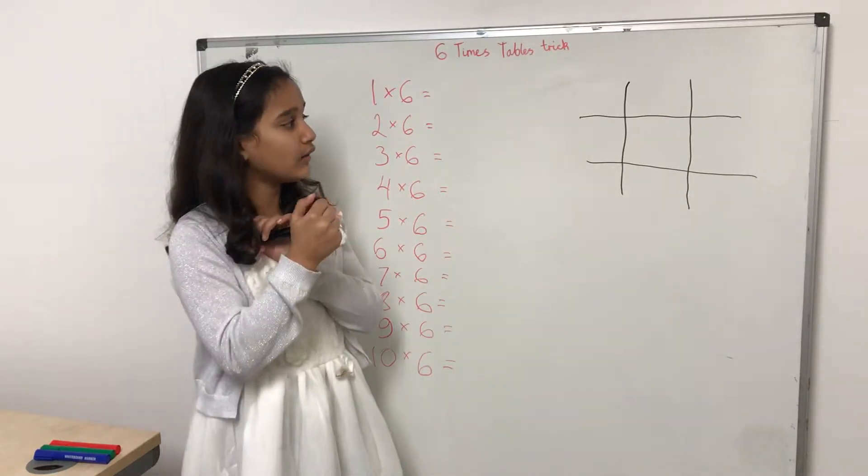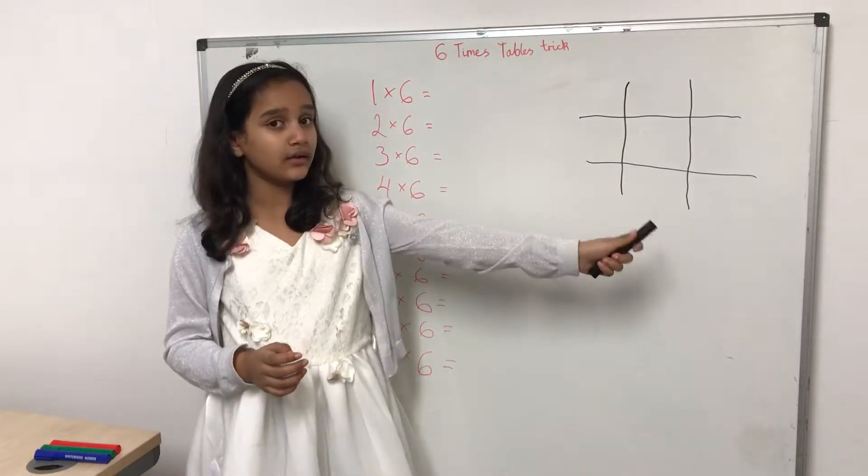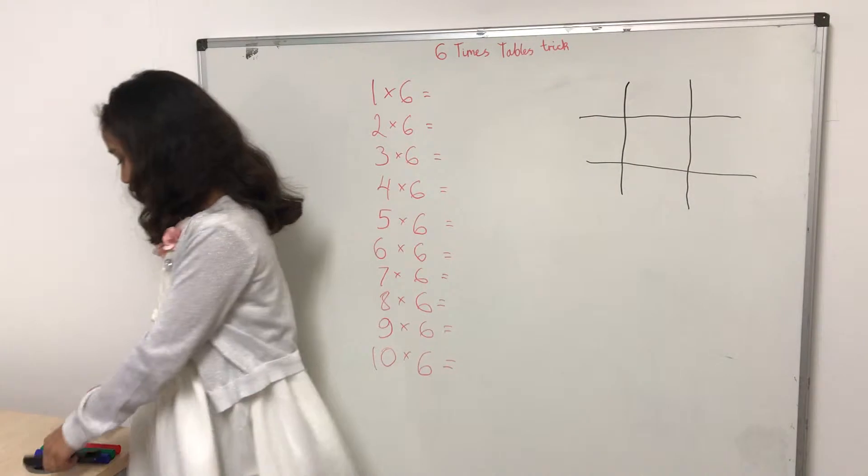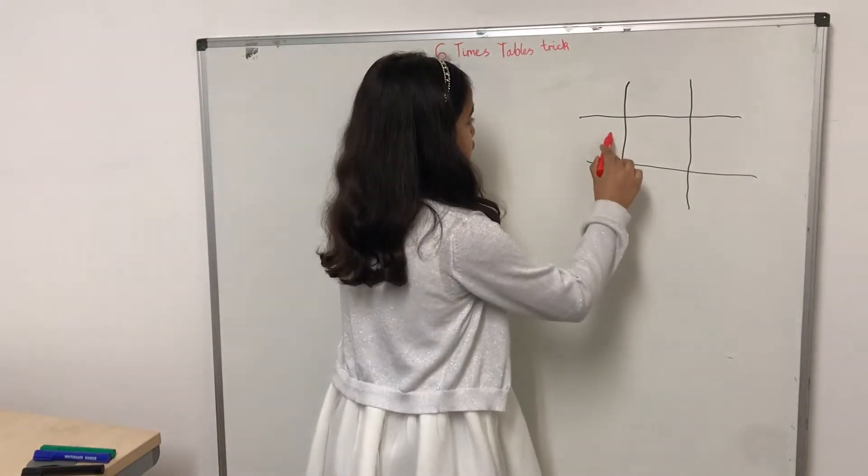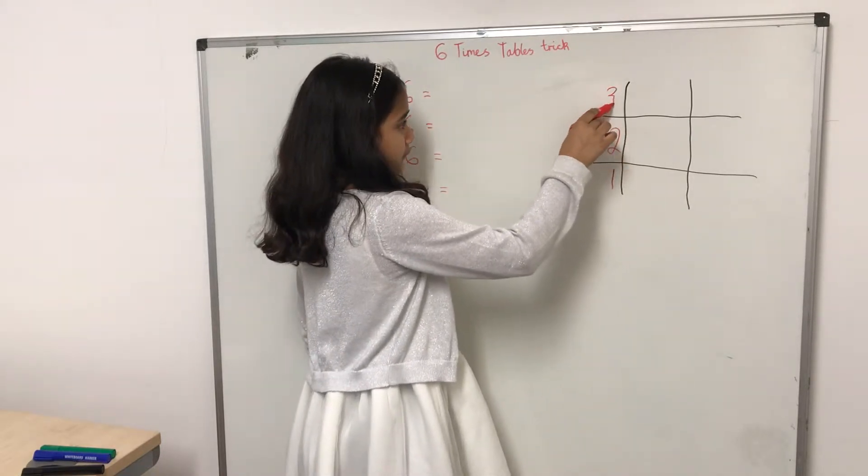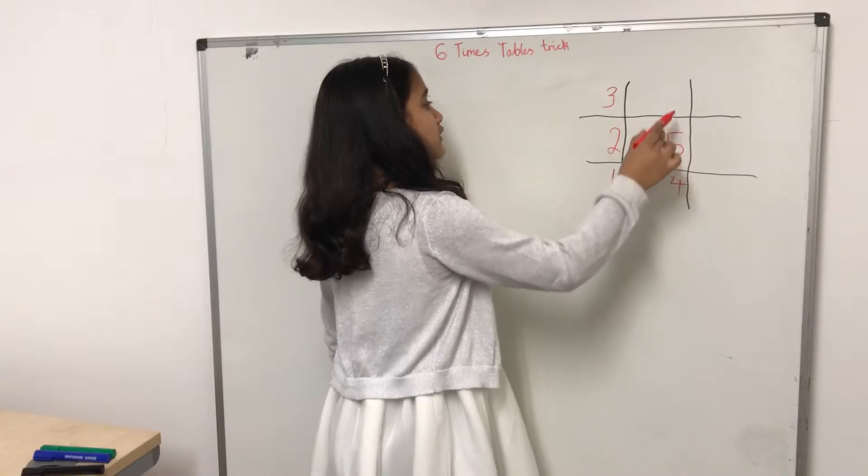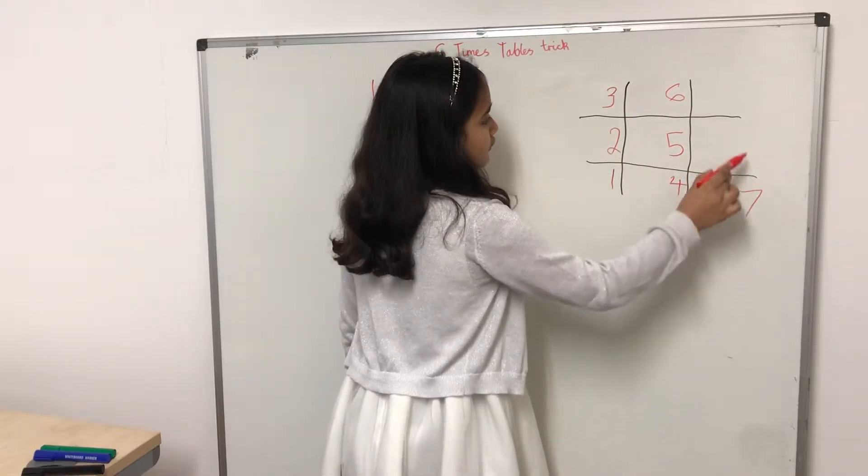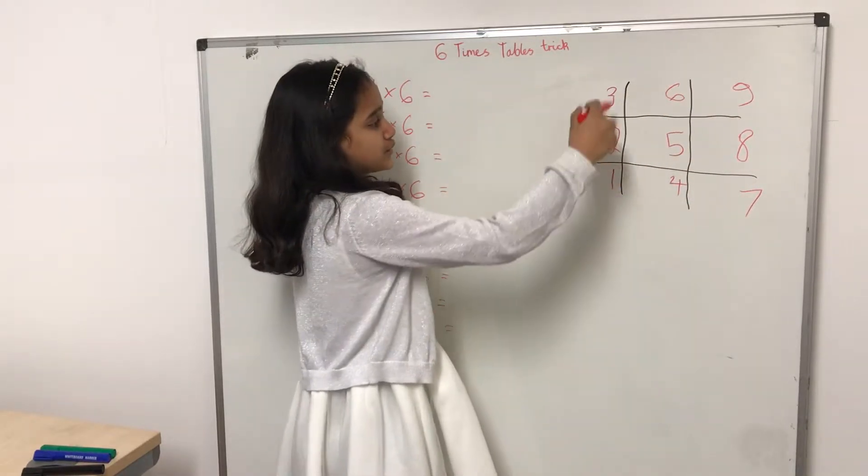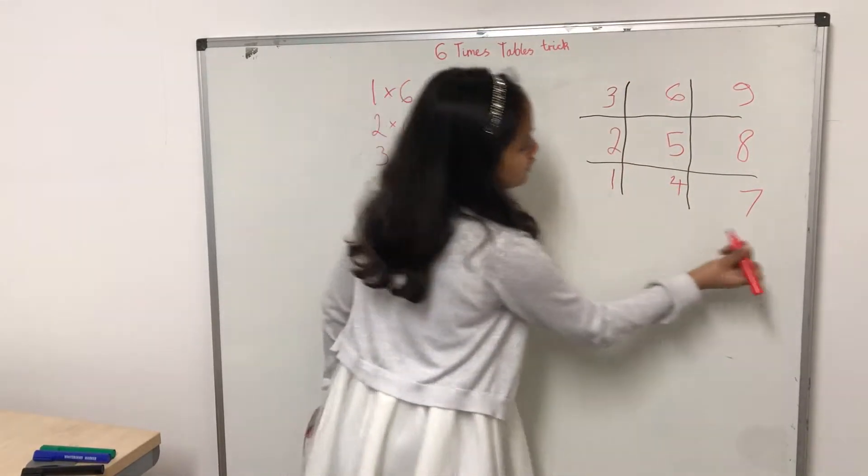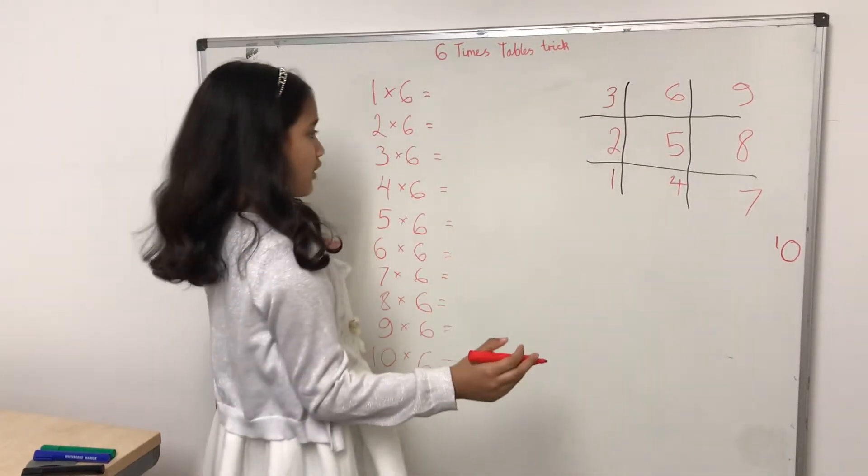Okay, now from one to ten, you're going to put in one to ten for the ones digits. So, one, two, three, four, five, six, seven, eight, nine, and then because we don't have space for ten, we're going to put in a small one and a normal zero.